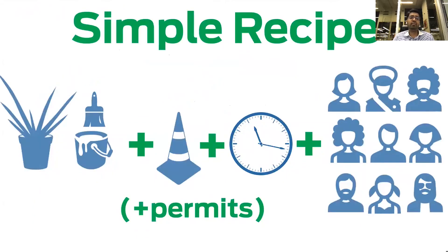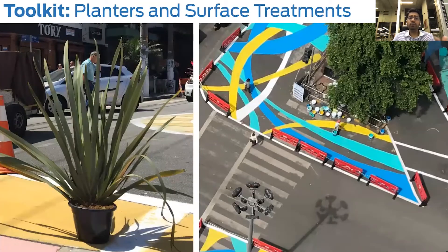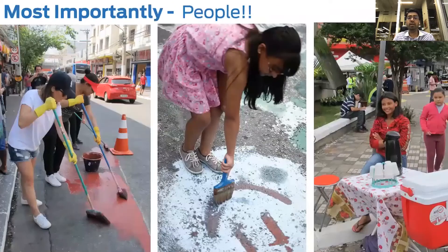This is exactly the power we need to leverage — to show that streets can change now through a series of interim interventions, whether pop-ups, interims, or capital projects. And it's a very simple recipe: just some paint, traffic cones, a dedicated and set timeline, and a huge bunch of stakeholders and volunteers. Some snippets of what can show change: planters, barricades, bright colors, seating and tables to program the space, umbrellas to make it comfortable, and bringing in kiosks and business owners.